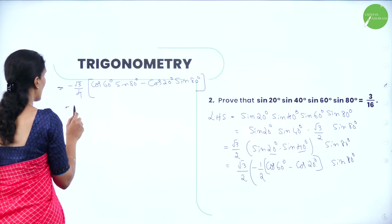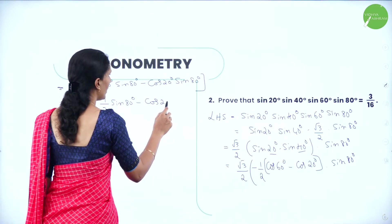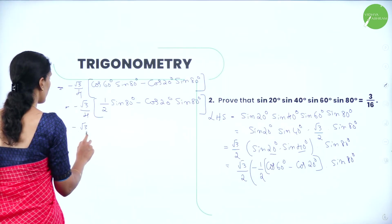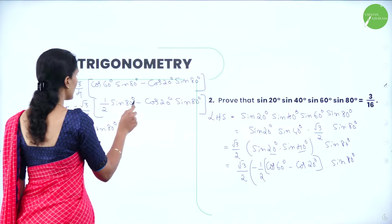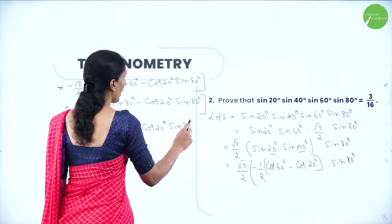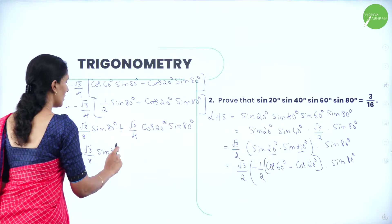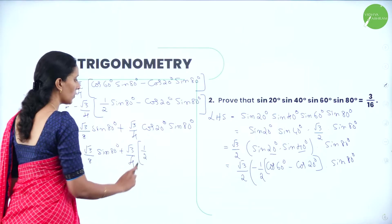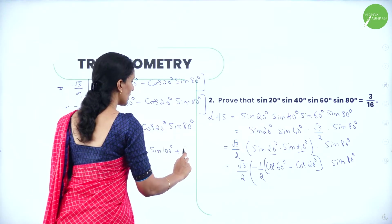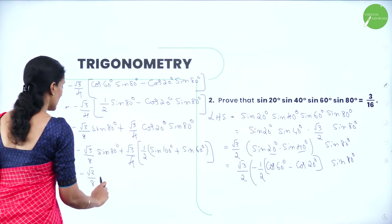Multiplying through: −(√3/4)·[cos60°·sin80° − cos20°·sin80°]. Since cos60° = 1/2, this gives −(√3/4)·[(1/2)·sin80° − cos20°·sin80°]. Now cos20°·sin80° is in the form cosA·sinB, so apply the product-to-sum formula: cosA·sinB = ½[sin(A+B) + sin(A−B)] = ½[sin100° + sin60°].